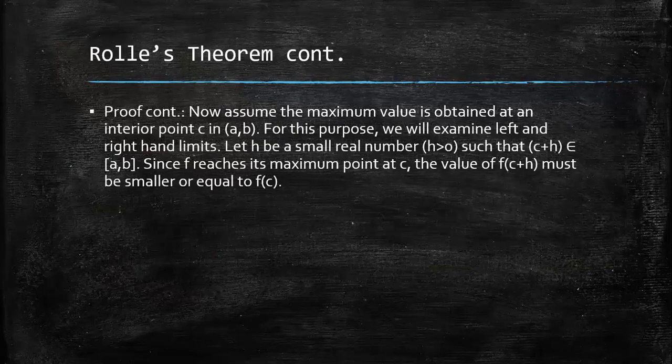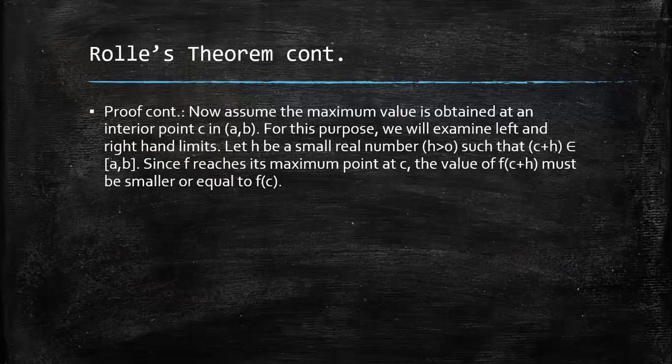Now assume the maximum value is obtained at an interior point c in (a, b). For this purpose, we will examine left and right-hand limits. Let h be a small real number, where h is greater than zero, such that c + h belongs to the interval [a, b]. Since f reaches its maximum point at c, the value of f(c + h) must be smaller or equal to f(c).